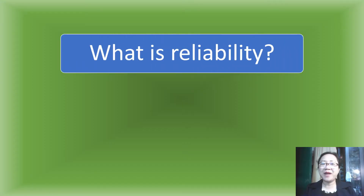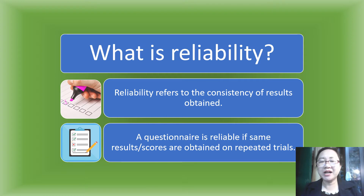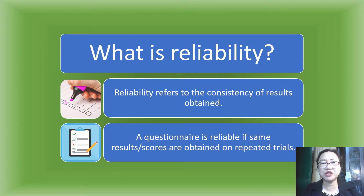What is reliability? Reliability refers to the consistency of results obtained. For example, a graduated cylinder measures the volume of a liquid. It is used in the laboratory because it is a reliable measuring tool for liquid.